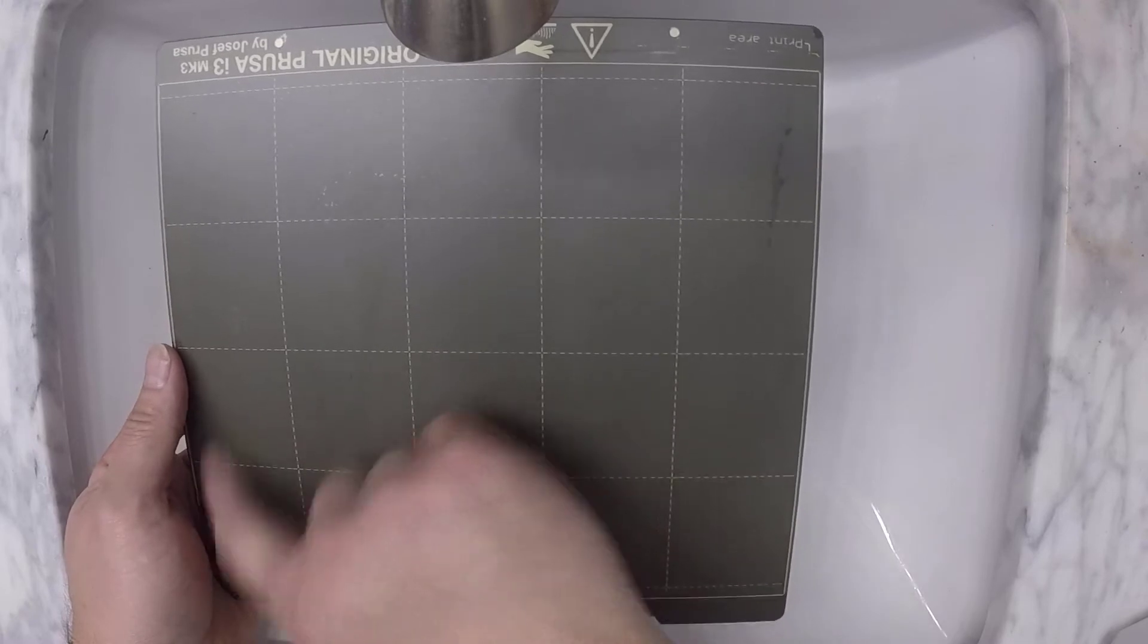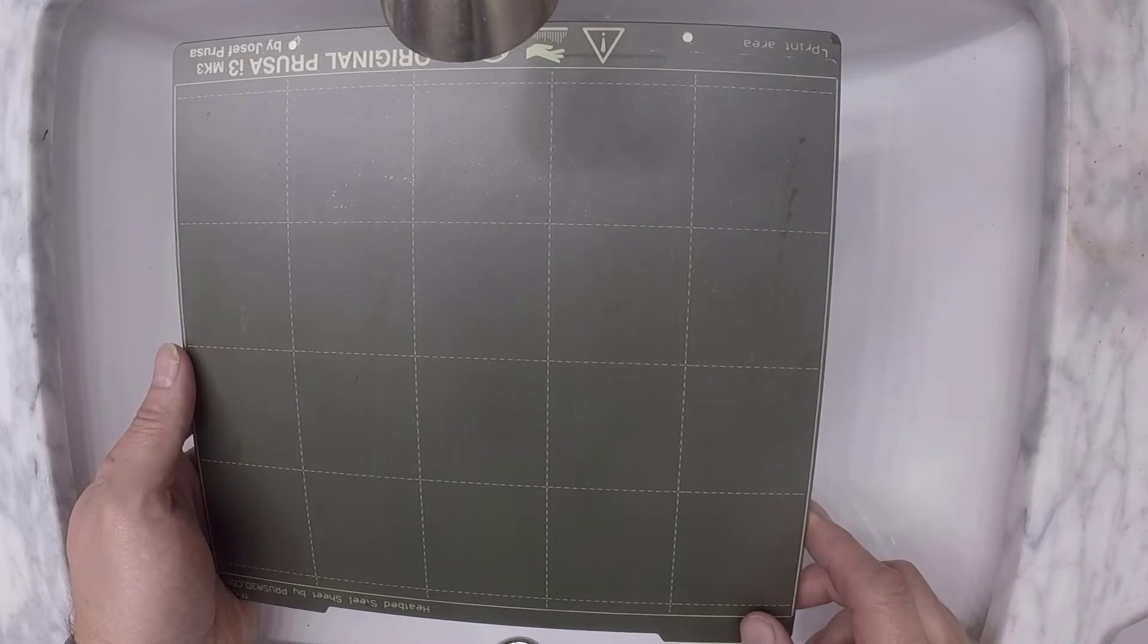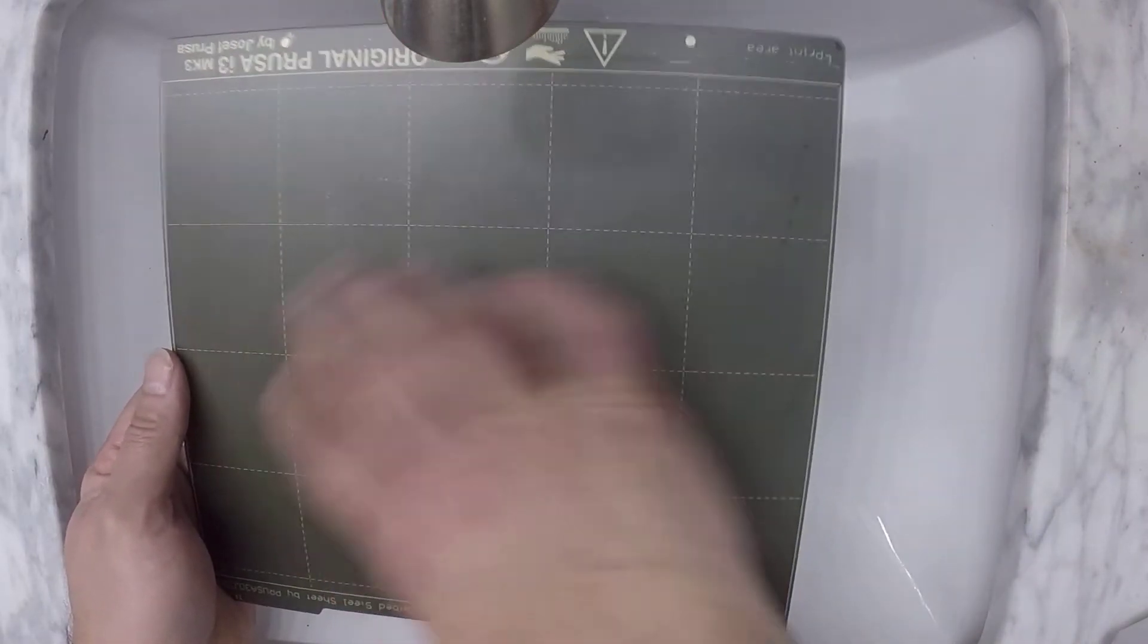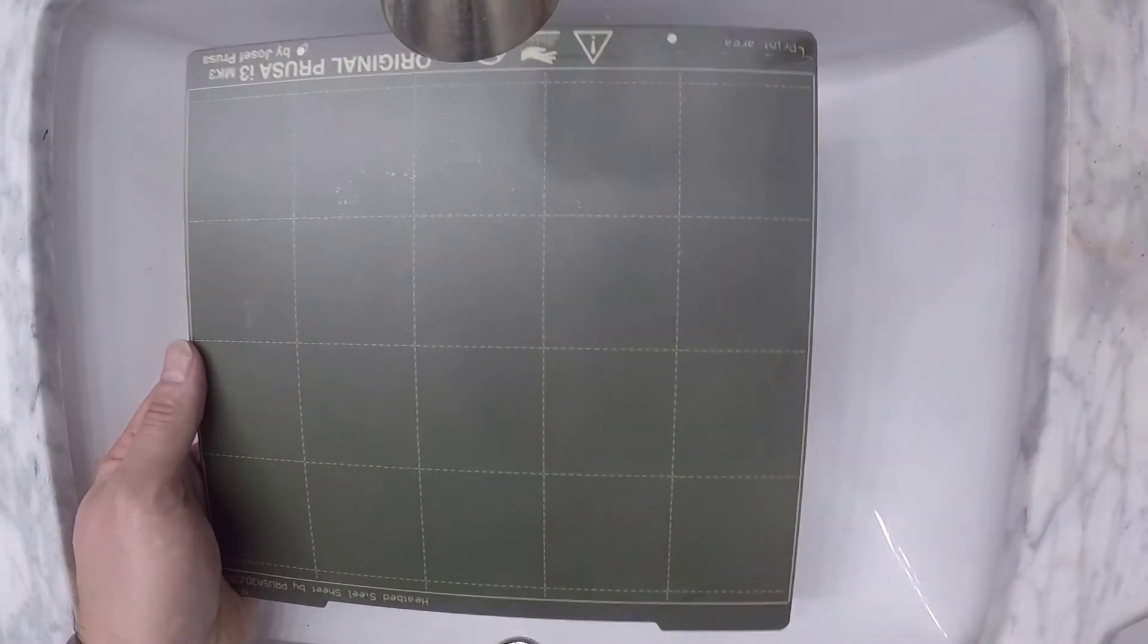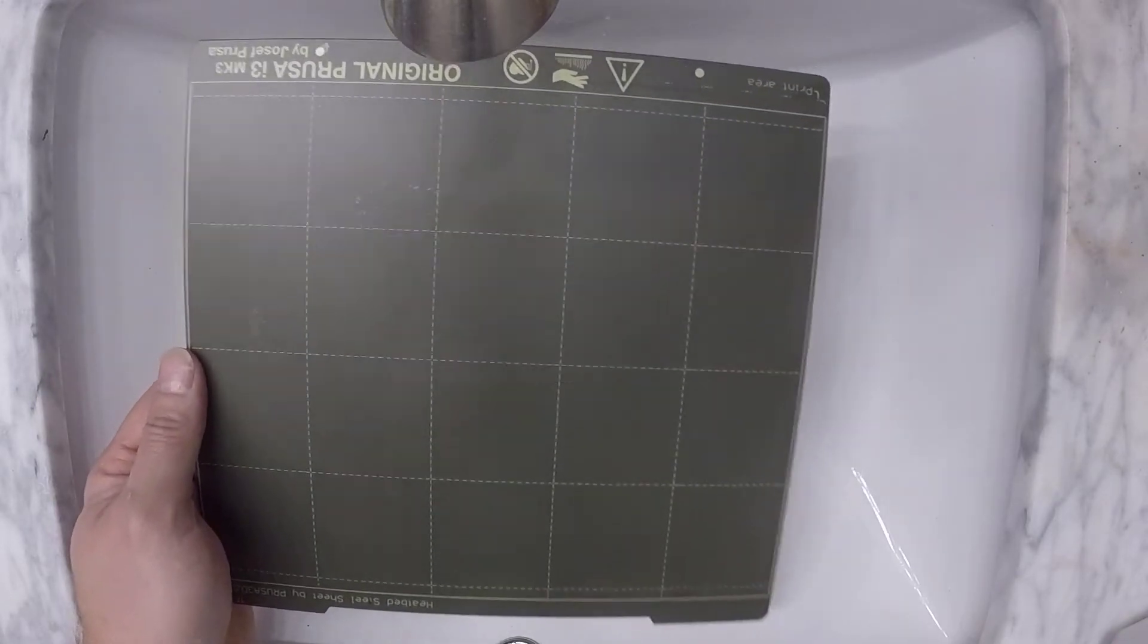and it also works as a protectant of your bed surface. Now it's not going to protect if you don't run your nozzle down into the bed or anything like that. That's still going to damage your PEI surface. But as far as using it over and over and over time and time and time again, it just comes out smelling like roses every single time. Look how clean that is and how smooth that is, how well that worked.